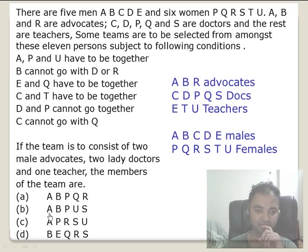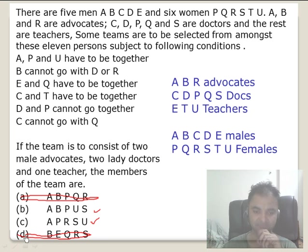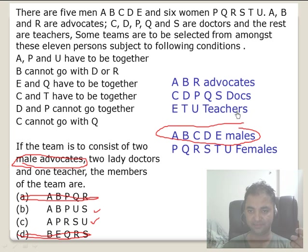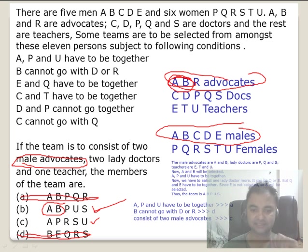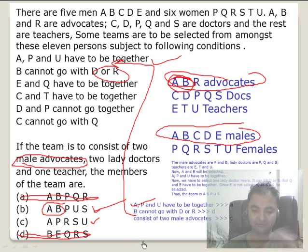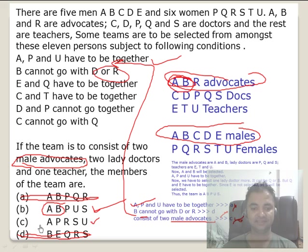Second question — same strategy. Start: A, P, and U have to be together. Check options: APU together here, together here, not here — gone. We're down to two options. Next condition: B should not be with D or R — eliminates another. Now: the team must contain male advocates. There are five males and among them are the advocates, so your answer must contain A and B. That's all — 30 seconds. Each statement eliminated one option; three statements gave three options out, leaving your answer.